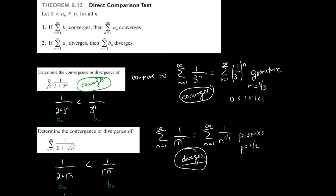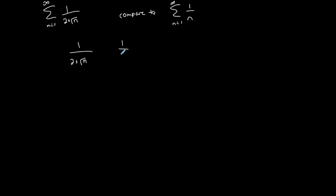So let's try the same series but compare it this time to the summation from 1 to infinity of 1 over n. We have 1 over (2 plus √n) and 1 over n. Let's plug in n = 9: 1 over (2+3) = 1/5, and 1/9. Since 1/9 is less than 1/5, the series 1/n is smaller so far. Let's try n = 16: 1 over (2+4) = 1/6, compared to 1/16. Again, 1/16 is less than 1/6.